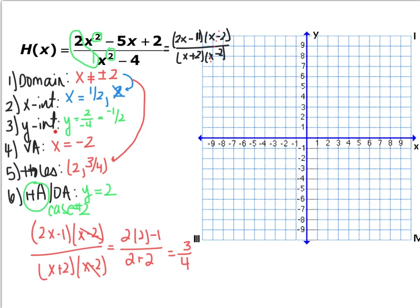Y-intercept: plug in 0 for x in standard form — everything simplifies to 2 over negative 4, or negative 1/2. Vertical asymptote: x minus 2 appears in both the numerator and the denominator, so it cancels and becomes a hole, not a vertical asymptote. The only vertical asymptote is x equals negative 2. The hole is at x equals 2; cancel the x minus 2 factor and plug in 2 to get the y-coordinate of 3/4. Horizontal asymptote: degrees are the same, so this is case 2 — divide the leading coefficients to get y equals 2.